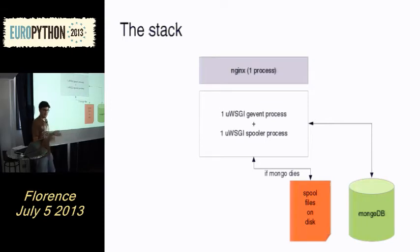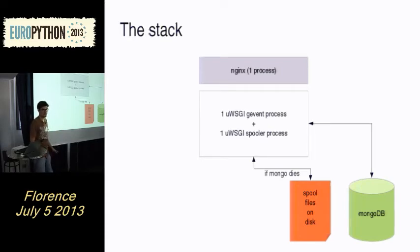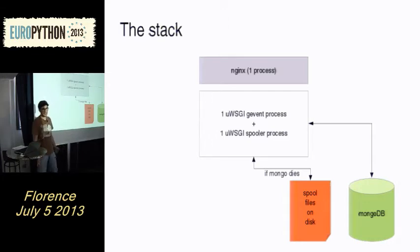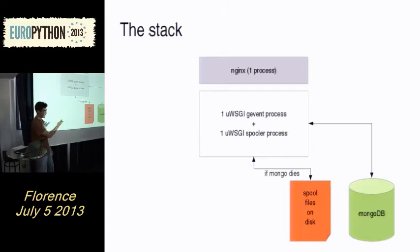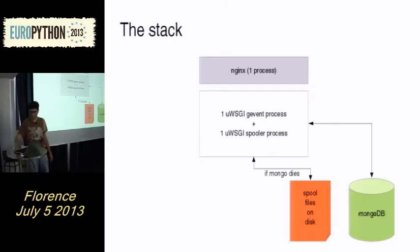If the spooler still fails, the file will not be removed and we will retry later. This way, when MongoDB comes back, every call will actually have its increment back into MongoDB.